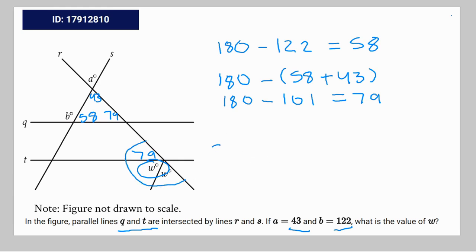So you can write the relationship like this: 2W plus 79 is equal to 180 degrees. Therefore, 2W is equal to 101, which means that W is equal to 101 divided by 2, or 50.5 degrees.